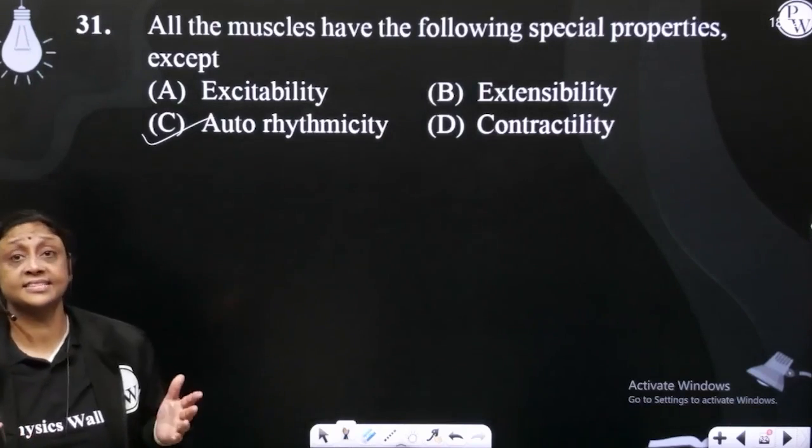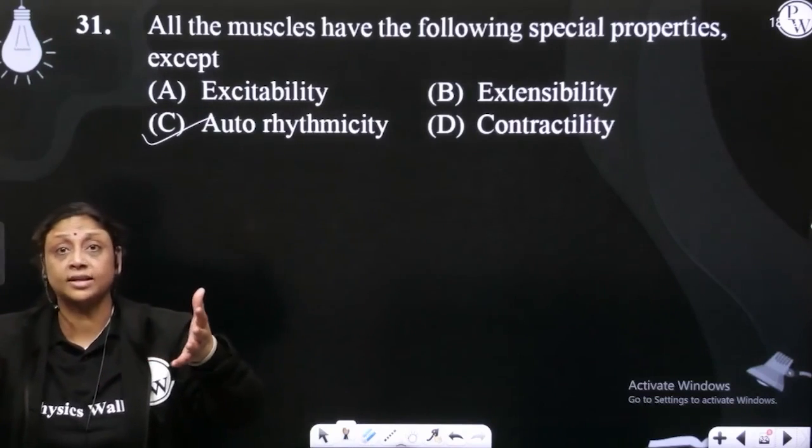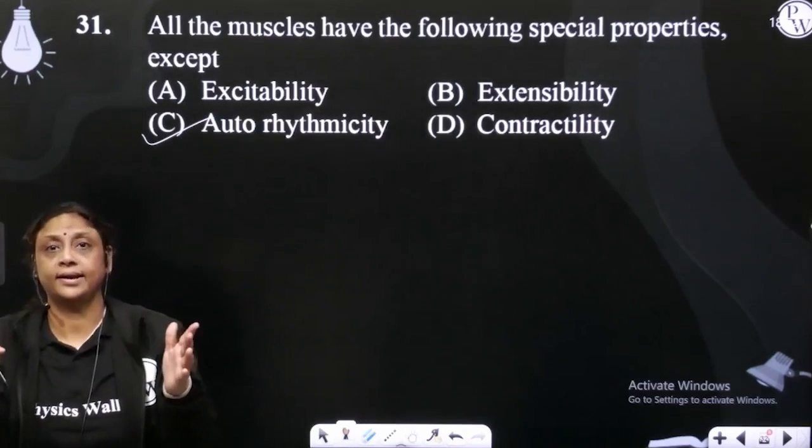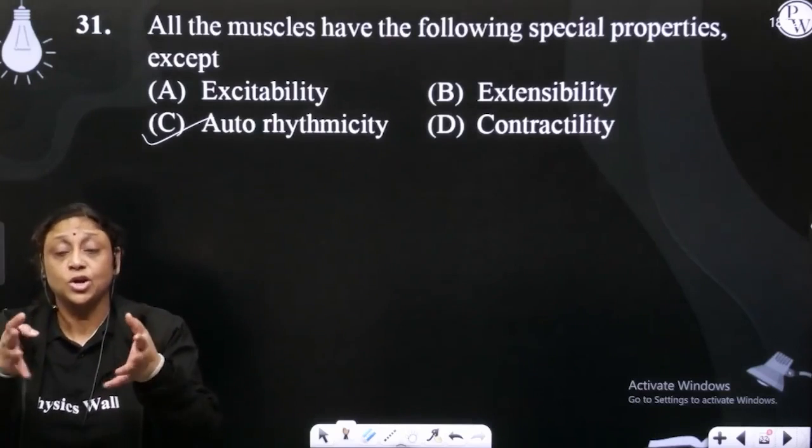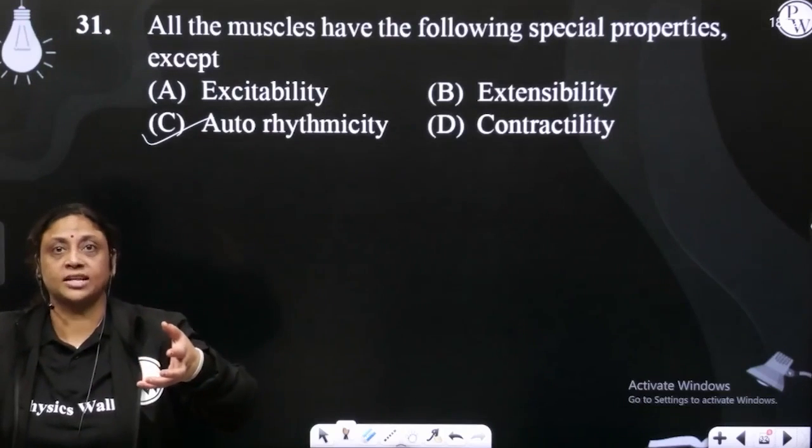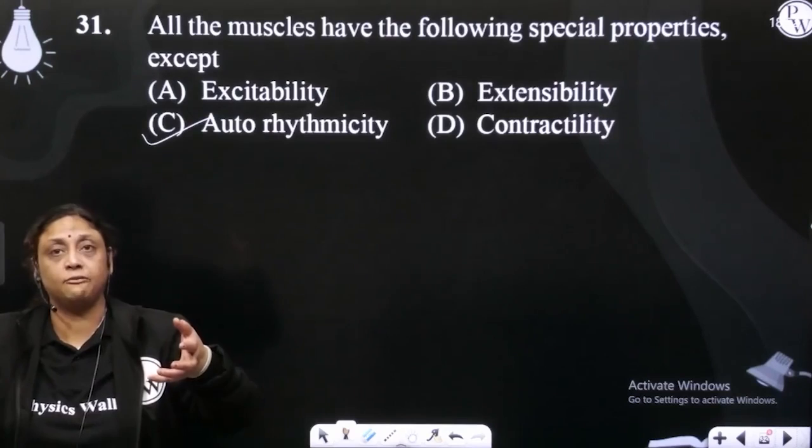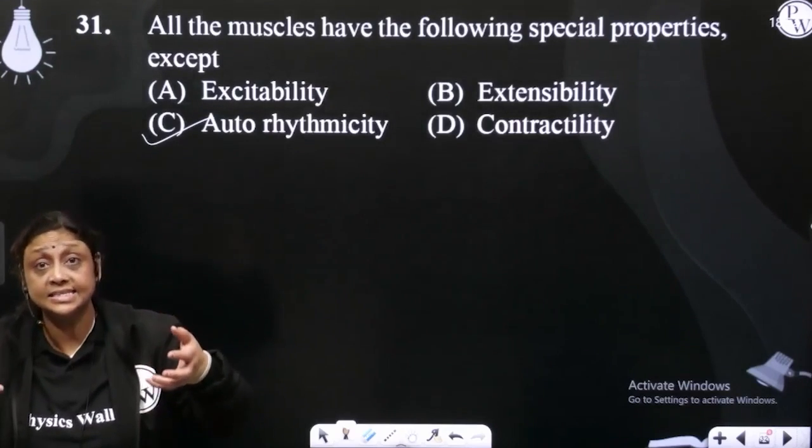Extensibility. Extensibility means extend, like the urinary bladder. If the urine is filled, filled, what happens? Extends, so the urine can be properly filled in it. It's called extensibility.